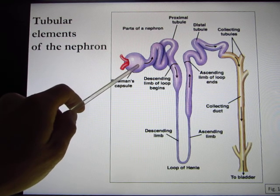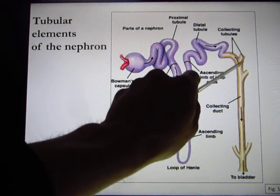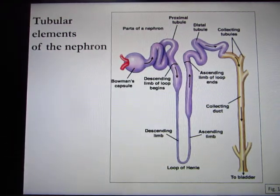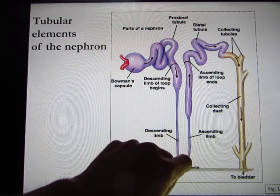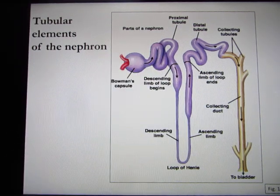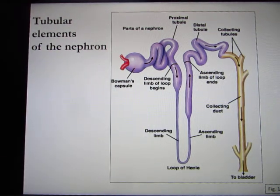From the end of the distal tubule and the collecting duct — the last 20% of the nephron — this area is regulated based on your body situation. When you drink a lot of water, your urine will be very diluted. When you don't drink enough water, your urine will be very concentrated. That happens in this part — depending on your body's needs, more or less water can be taken back.